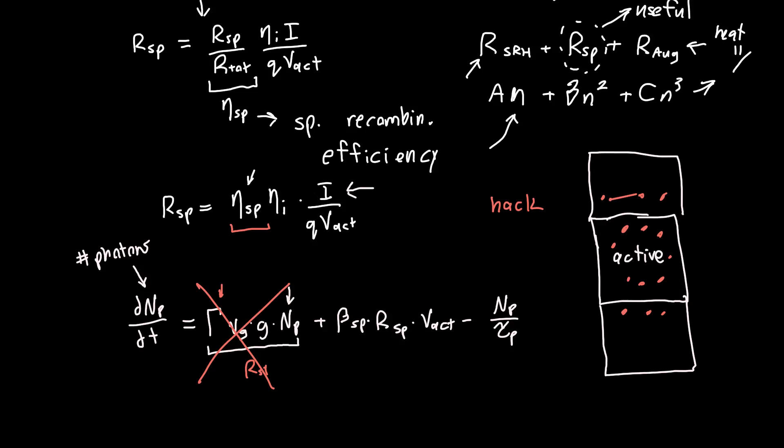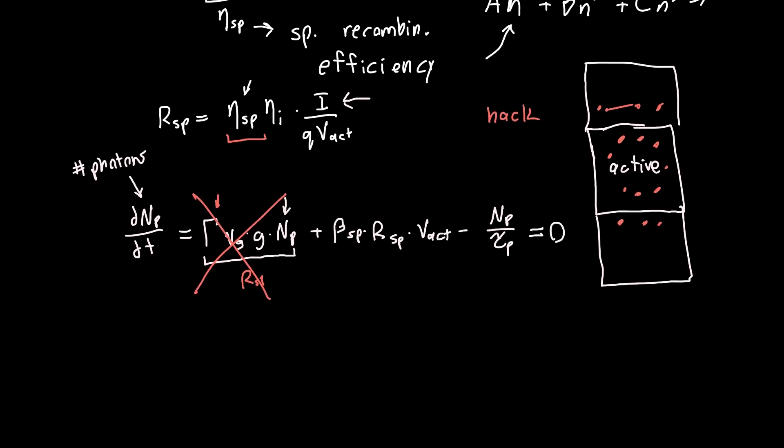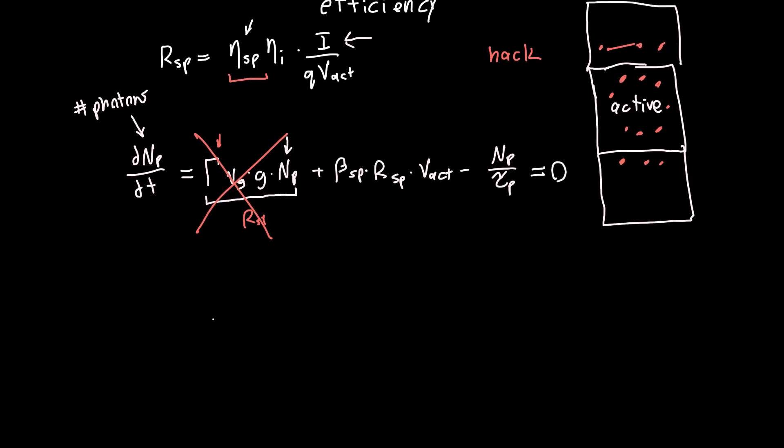But I said we were going to ignore stimulated emission, so that won't really matter until the next video. And we're also interested again in steady state, so we can set this whole thing equal to zero. And rearranging it in terms of the number of photons. So we just move this term over to the left-hand side, multiply everything by tau p. We get that this is just equal to this beta spontaneous term times tau p times R spontaneous times V active. And we know R spontaneous. We just calculated it previously.